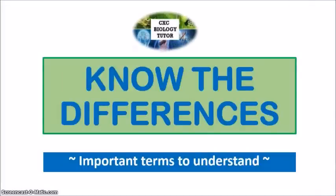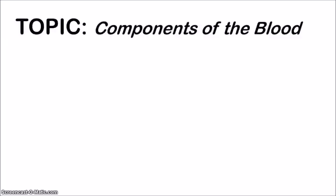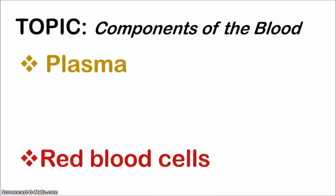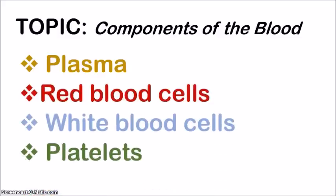Hey, it's Michelle, your CSU biology tutor again. Welcome back to the Know the Differences series, in which I go through with you the important terms that you need to understand. In this video, I'll be looking at the components of the blood — the plasma, the red blood cells, the white blood cells, and the platelets. These are the four components of the blood, and you need to be able to differentiate between them in terms of their structure and their functions.